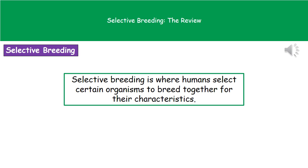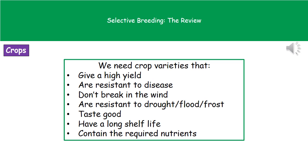Welcome to our review on selective breeding. The first thing we need to know is what selective breeding is. Quite simply, it's a process where humans select certain organisms to breed together for their characteristics — for example, picking the two cows that have the most meat on them to produce an offspring that has lots of meat, providing better characteristics.